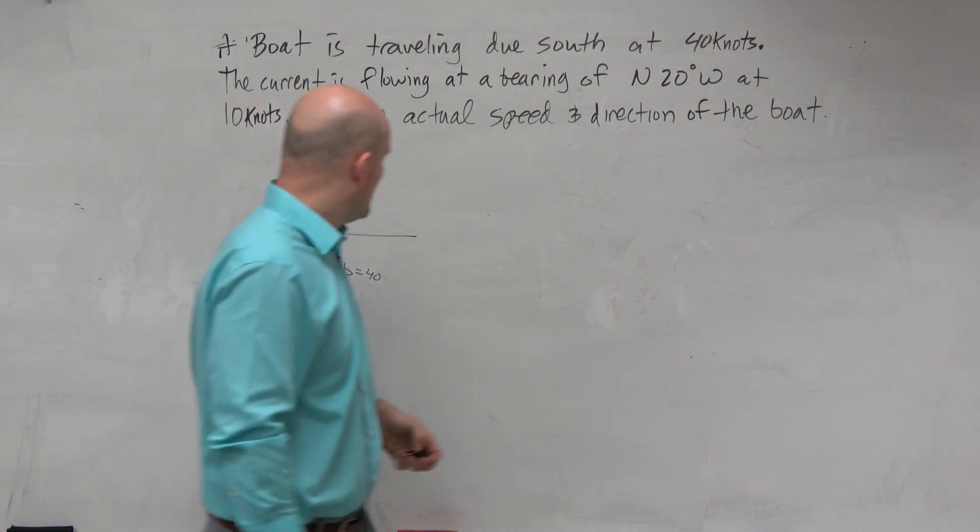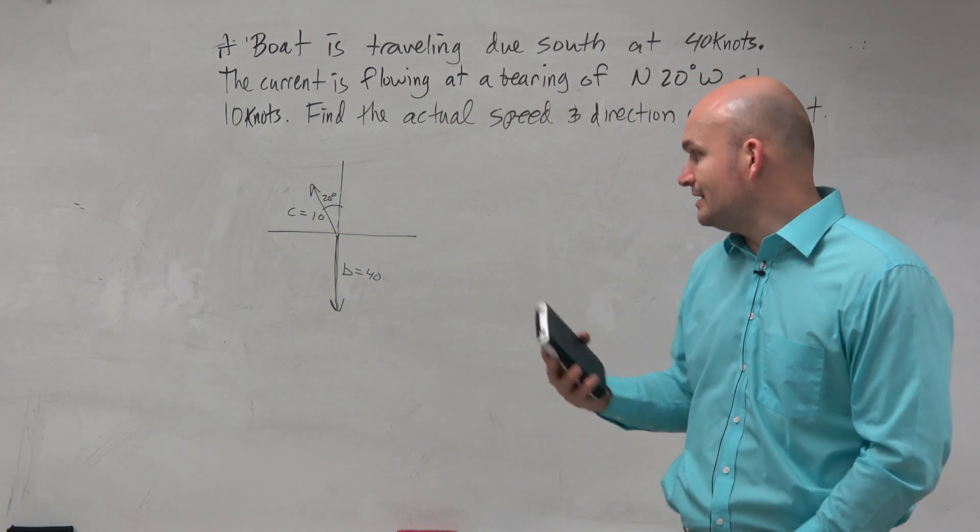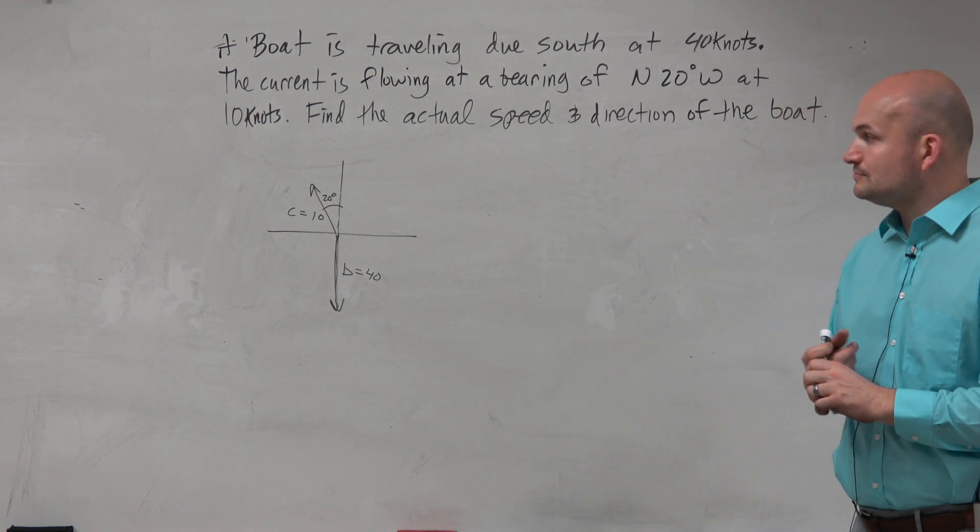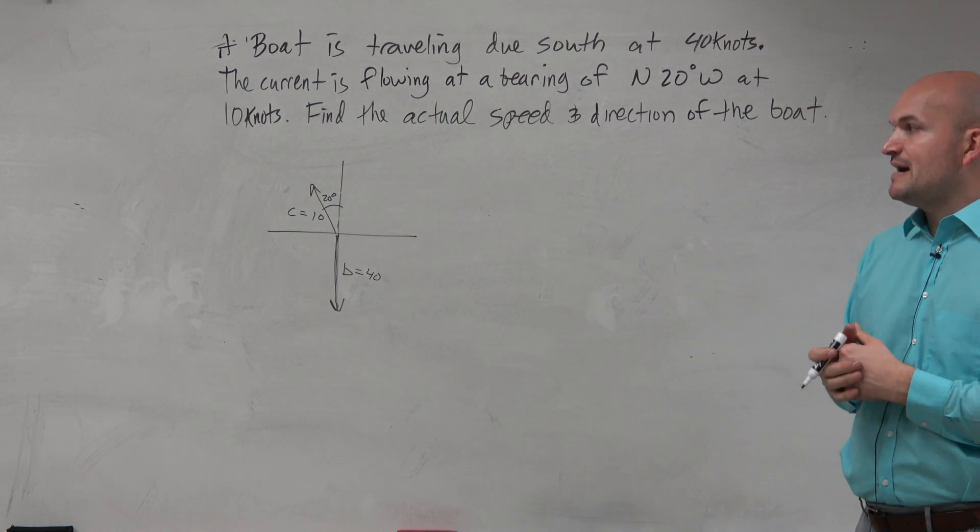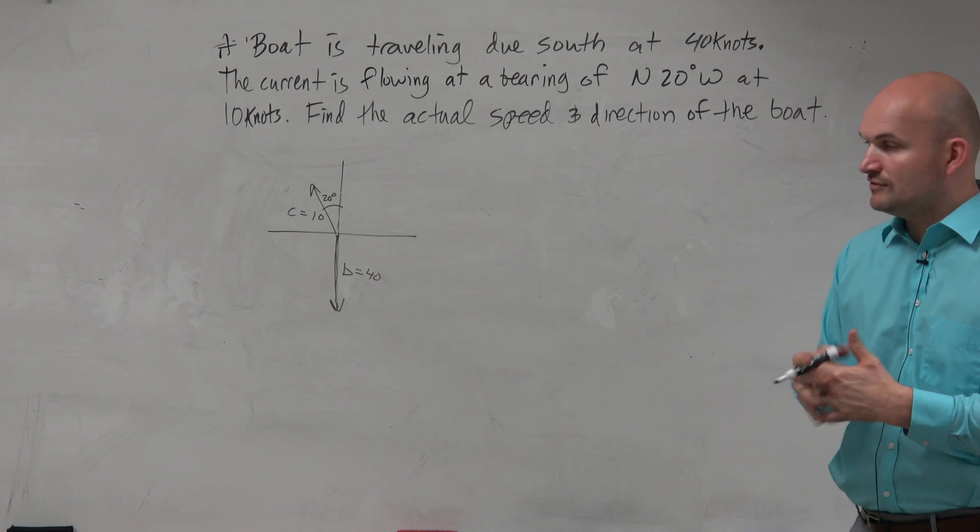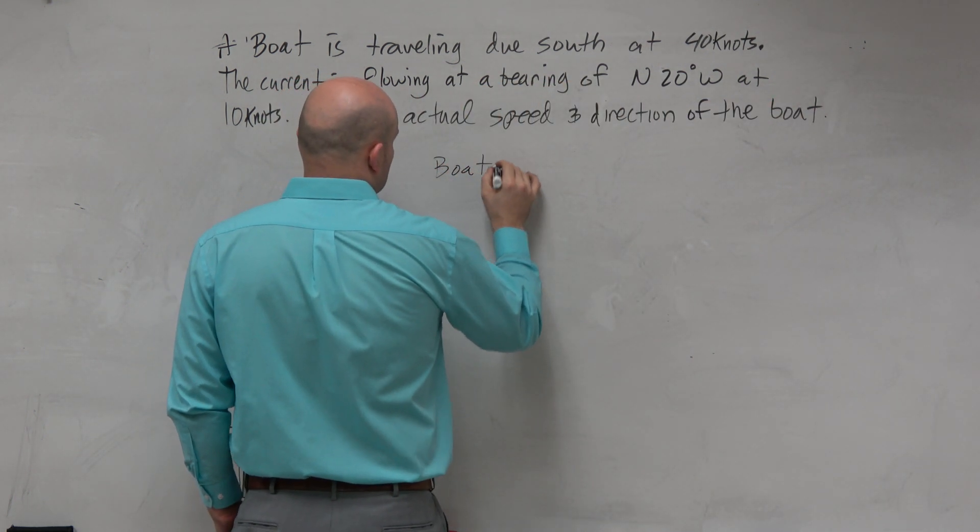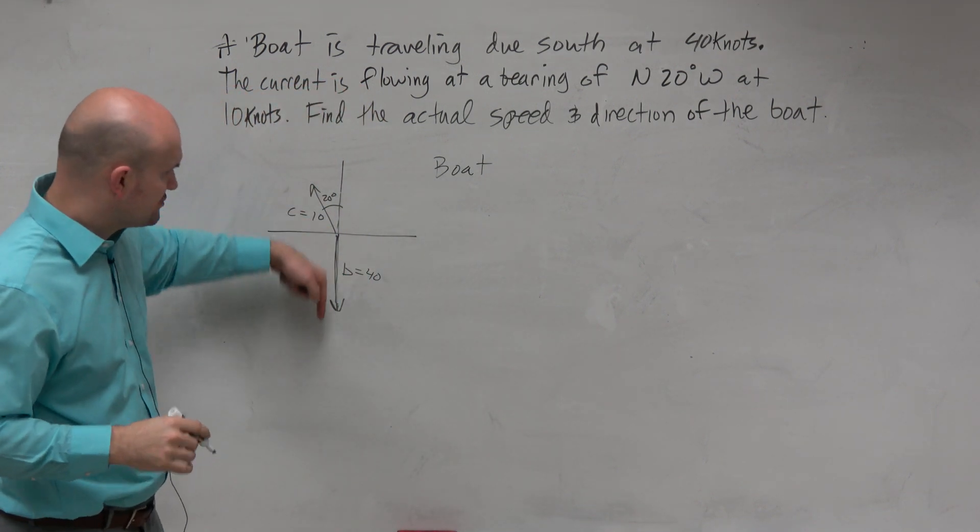Okay. So basically, what we want to do is, without calculating this, let's represent a vector for each component, our vectors that we have. So the first one is our boat. Okay? Now our boat is going directly due south.